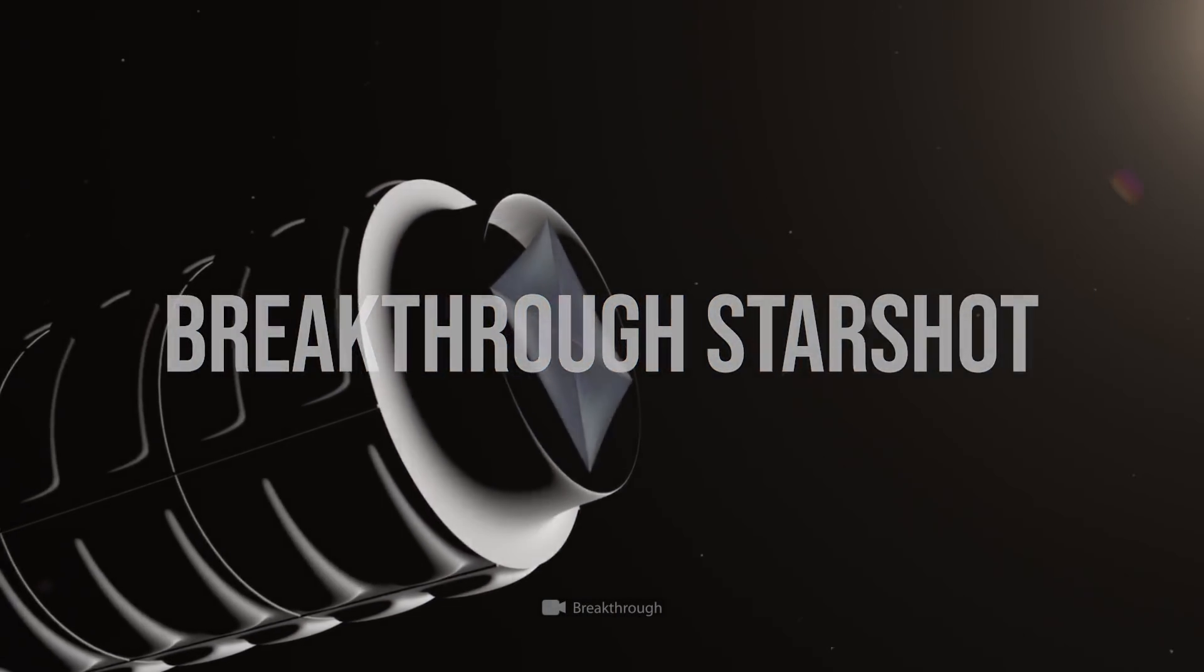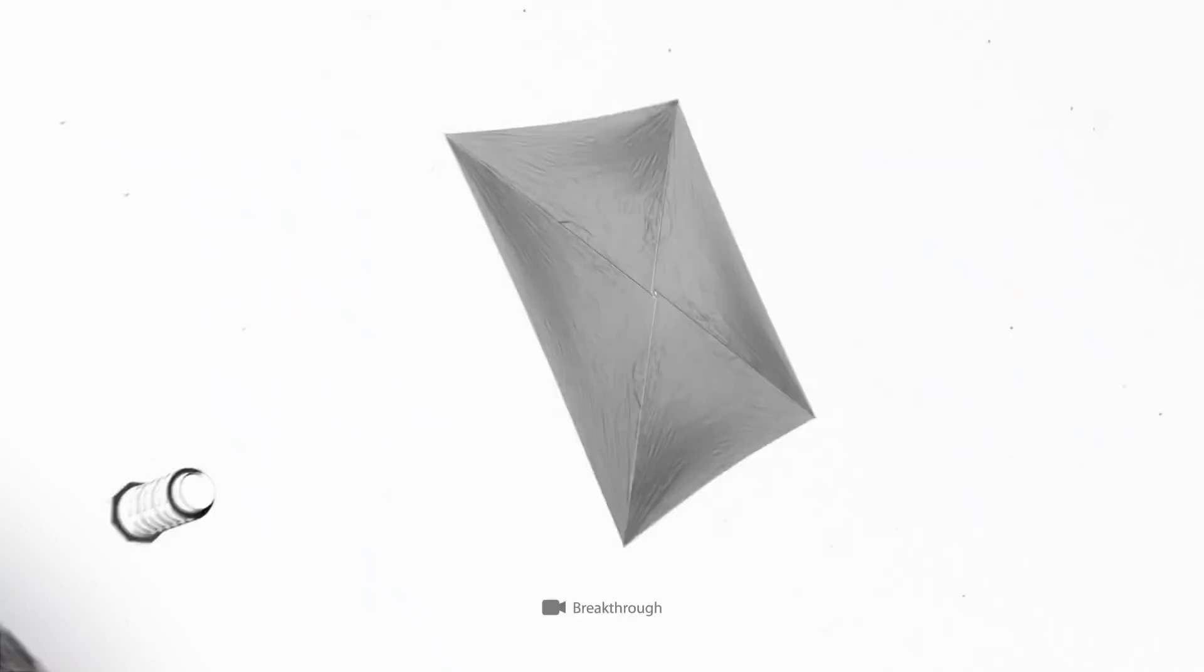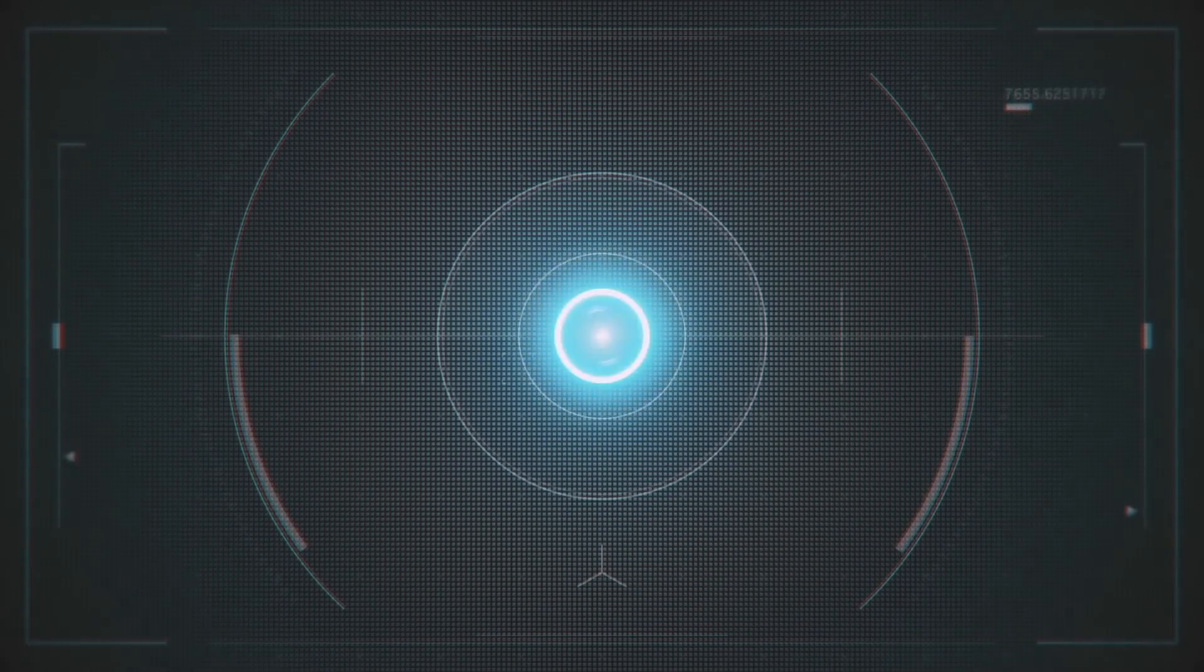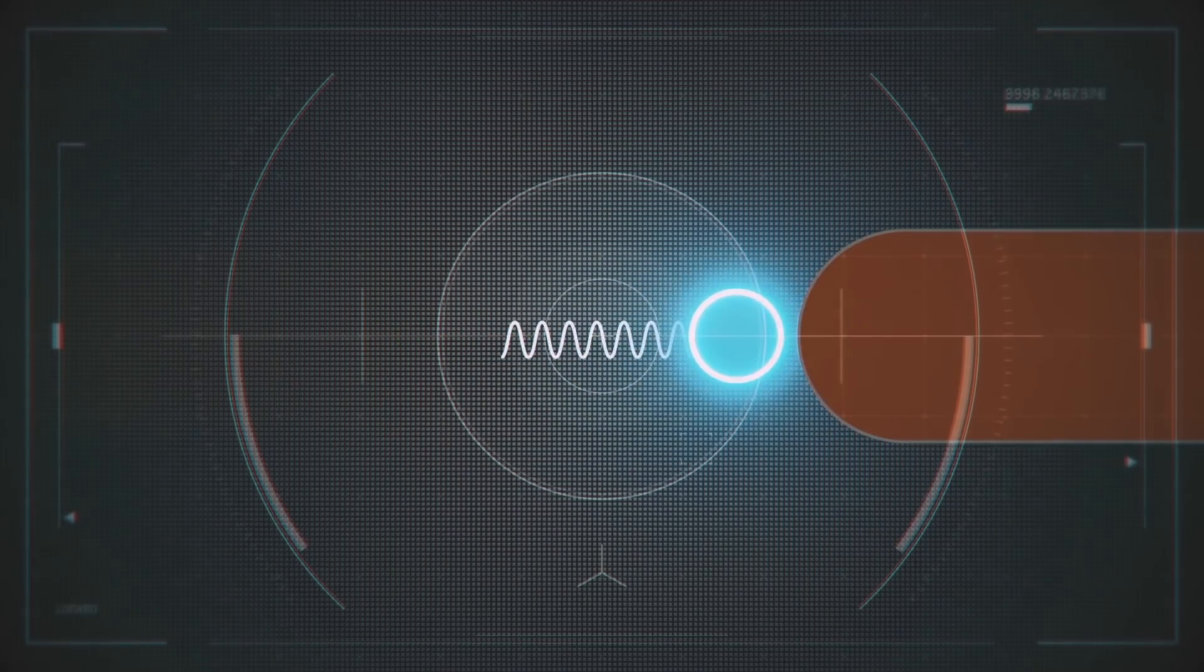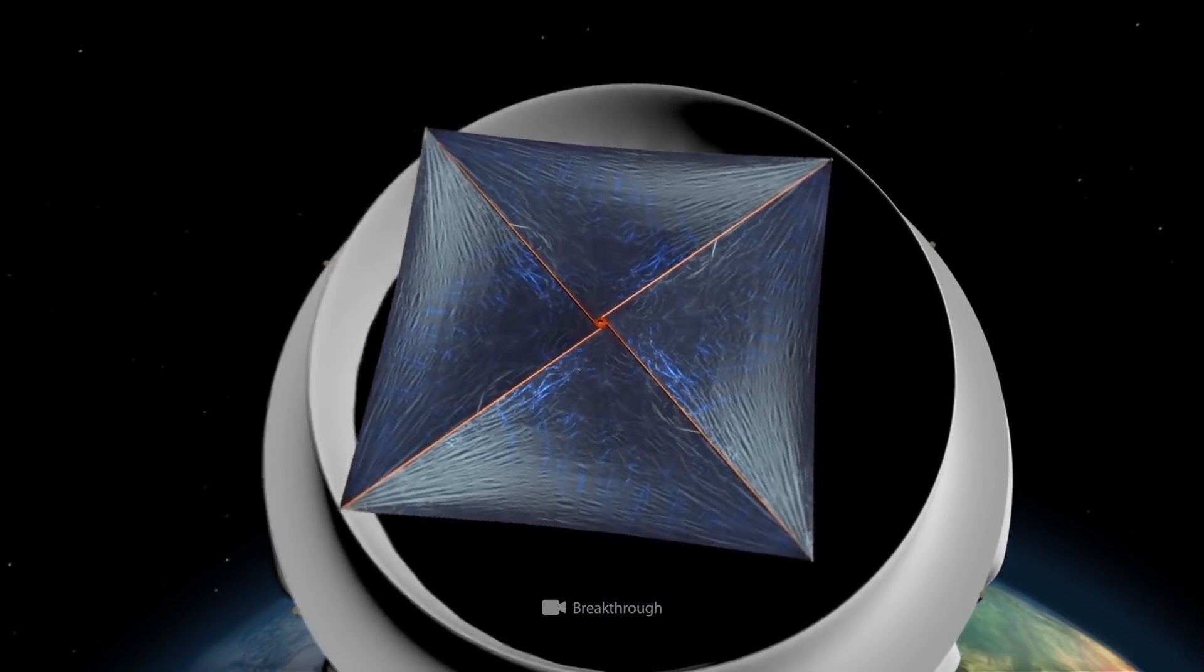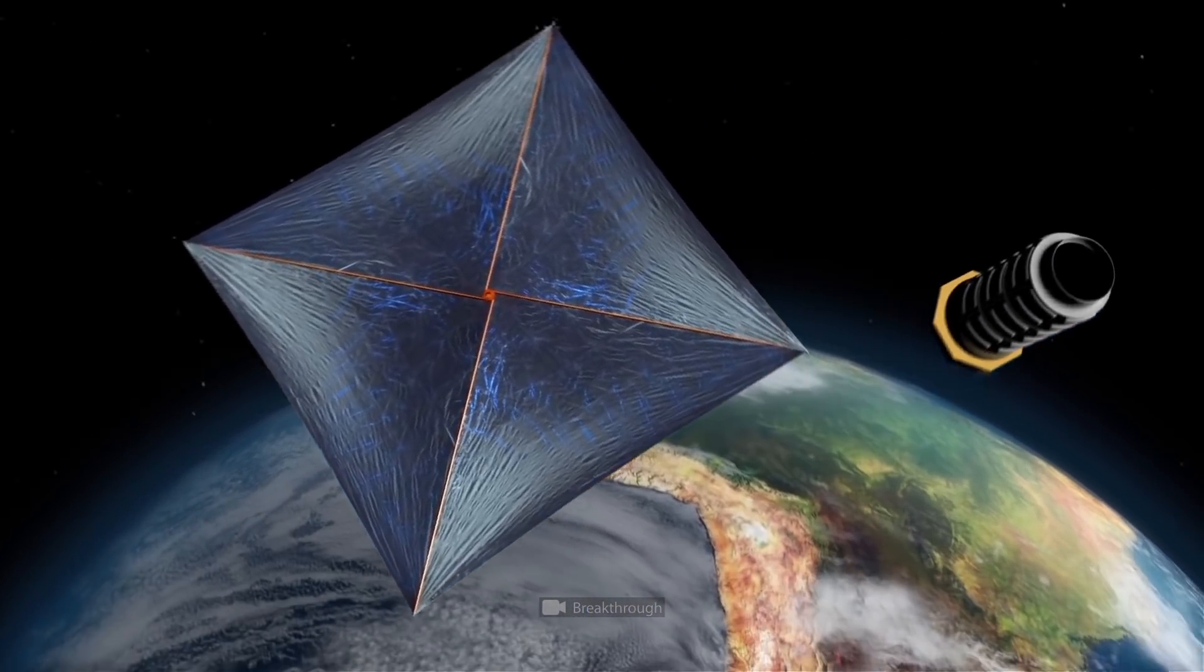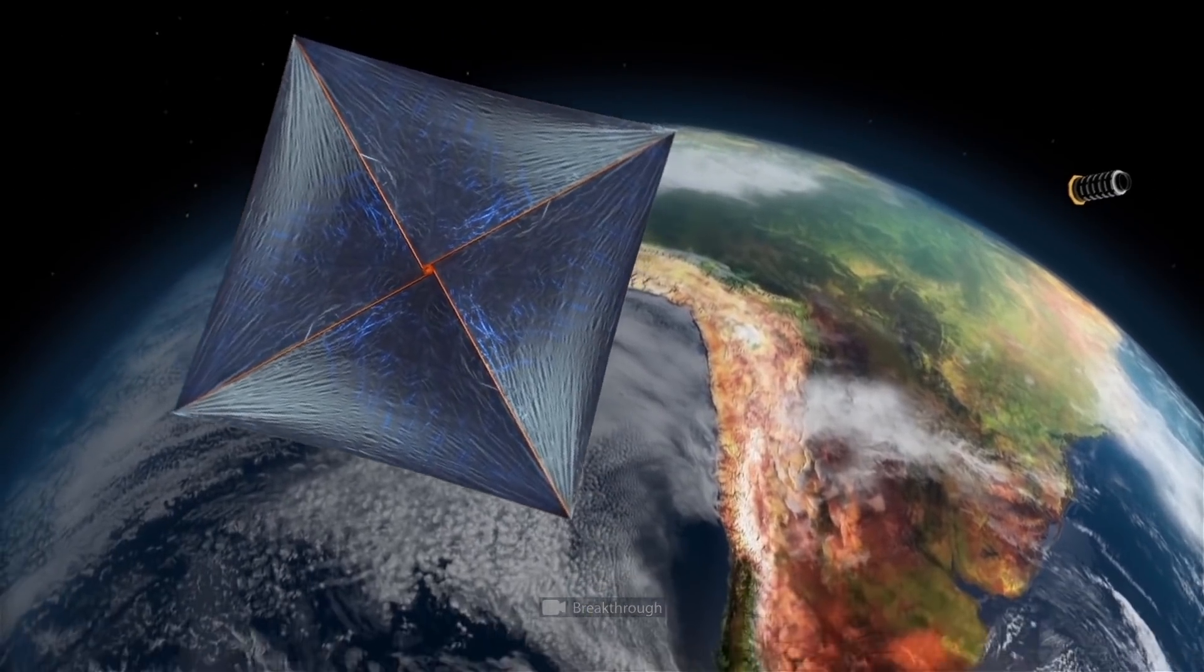So far, only the Breakthrough Starshot Project could hypothetically do that. The idea is based on the fact that ordinary photons have impulse and can push objects they bump into. In a nutshell, if you put a solar sail in space, the light of our star or a laser will make it fly.